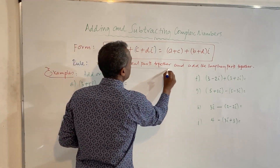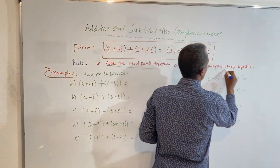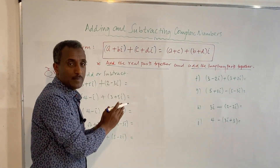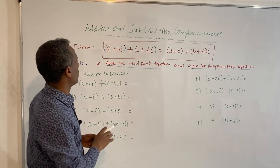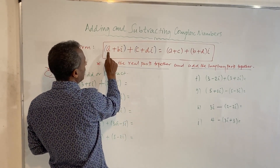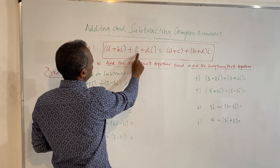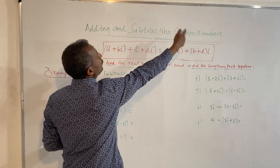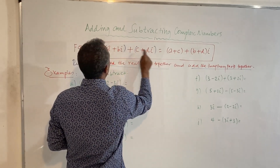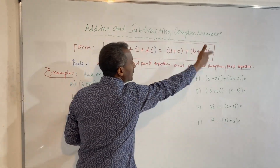We add the real parts together and the imaginary parts together. A plus C gives the real part of the new sum.